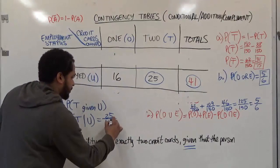Just divide 25 by 41 on your calculator and round to the specified number of decimal places.